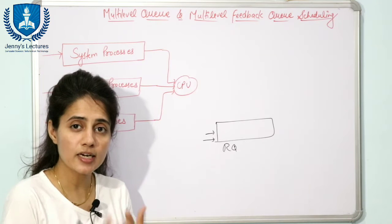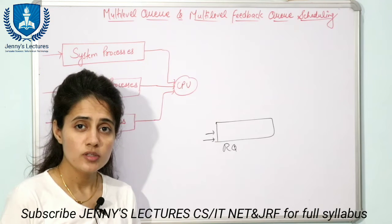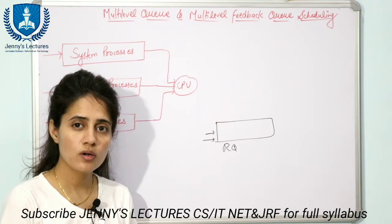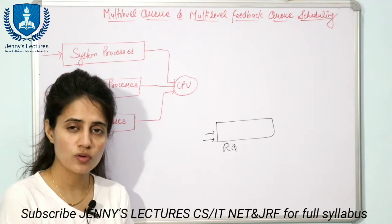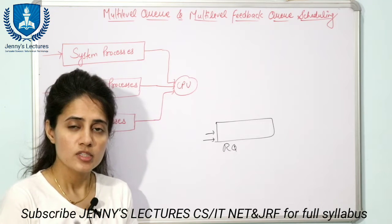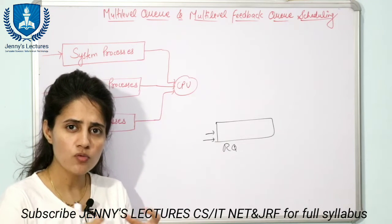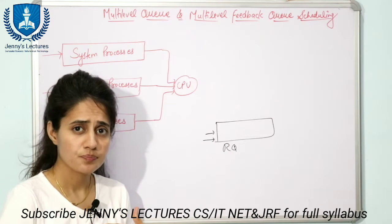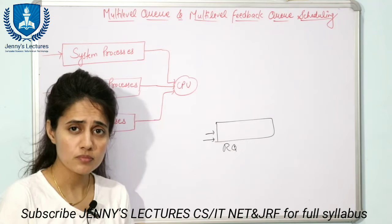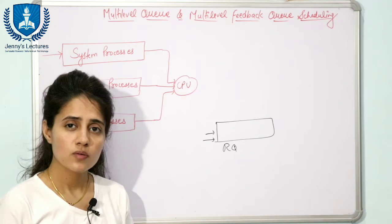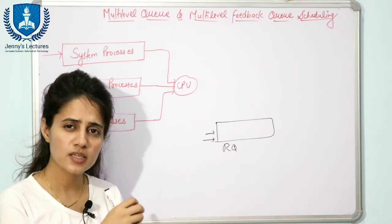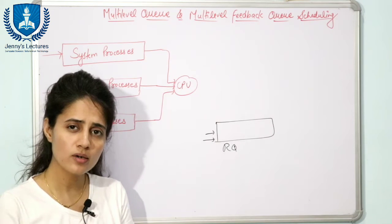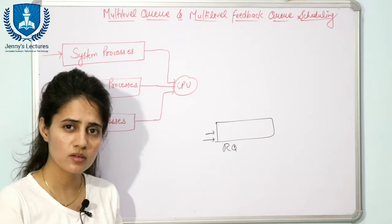Some processes are batch processes, and some are interactive processes. Interactive means when you are interacting with an application — for example, when you are working on a word processor like Microsoft Word, or writing a program through the console or command line. Batch processes are not interactive; they run in the background. You just submit them, go away, and come back after some time to collect the result.